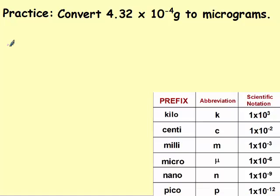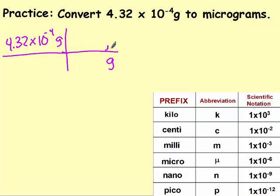So for this one, we have 4.32 times 10 to the negative 4th grams. Grams on bottom. Micrograms on top. One microgram, because again, this is my prefix, is equal to 1 times 10 to the negative 6th.